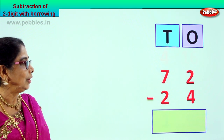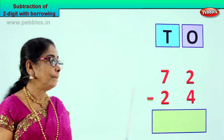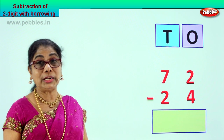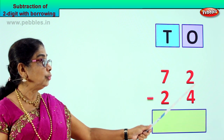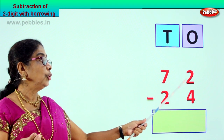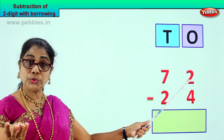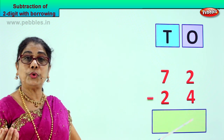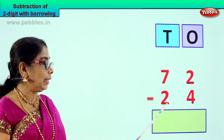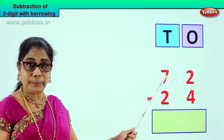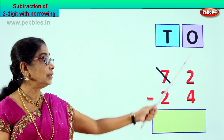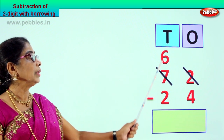Let us take a new sum. Look what you have here — we have 72 minus 24. 72 take away 24. When we minus we begin with the ones place first. Here we have 2 minus 4. From a small number 2 you cannot minus a big number 4. So here we are going to do borrowing — we go to the tens place and borrow 1 from here. 1 ten — you bring it to the ones place and it will be 10 plus 2, which is 12.